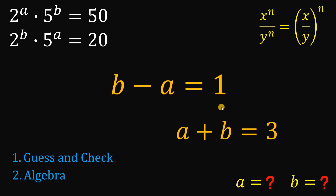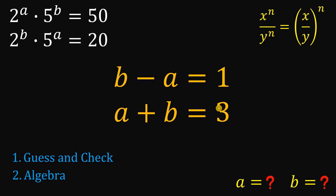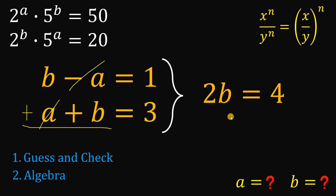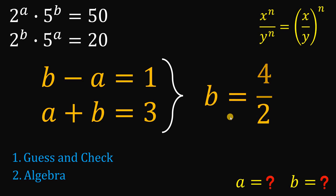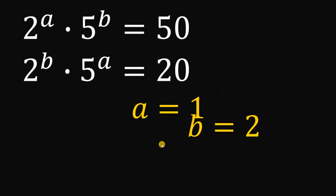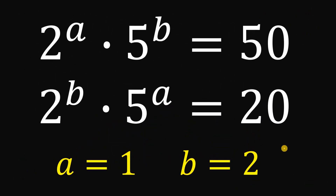Using these two equations — a plus b equals 3, and b minus a equals 1 — we can solve for a and b. When we add these two equations, the a terms cancel out, giving us 2b equals 4. Dividing both sides by 2, b equals 2. Substituting back into b minus a equals 1: 2 minus a equals 1, so a equals 1. Therefore, a equals 1 and b equals 2. And as always, we are done.